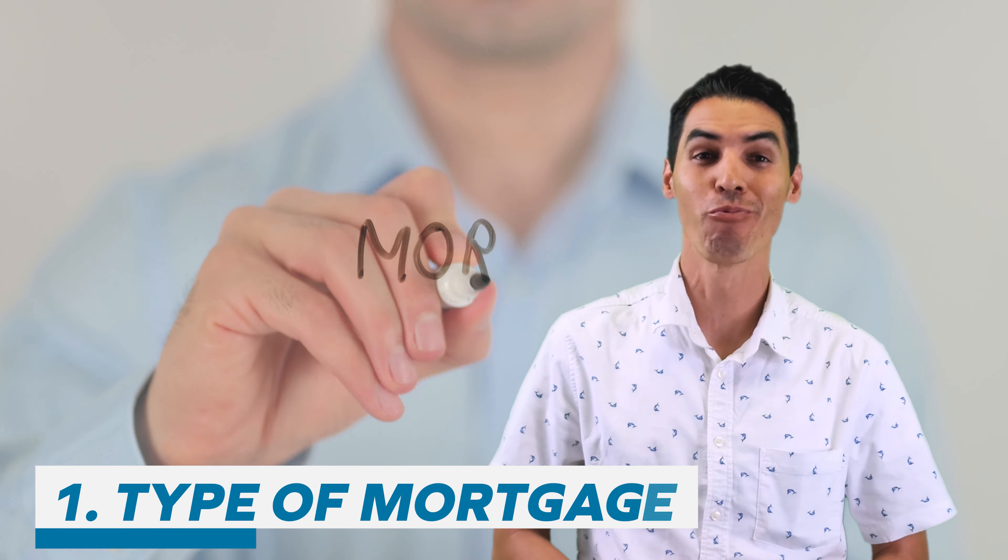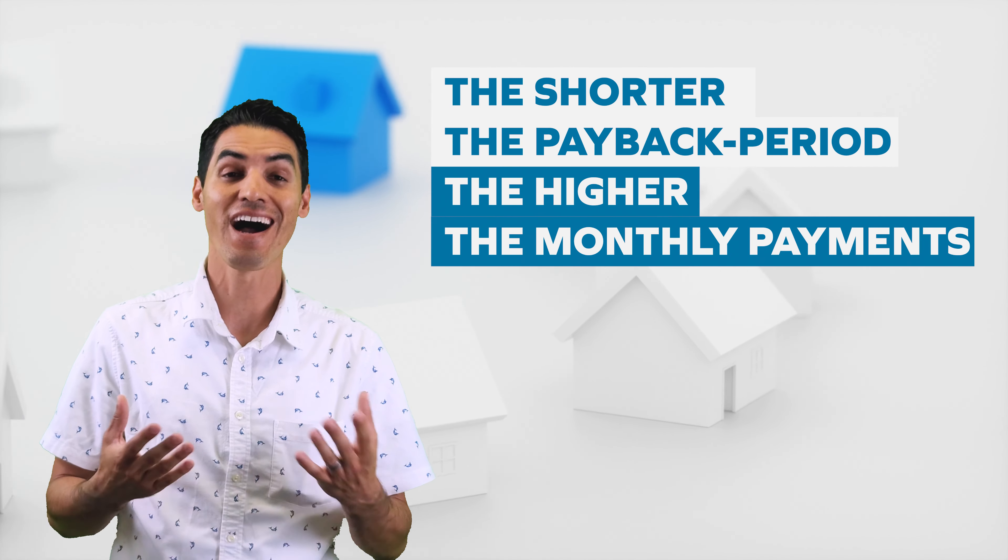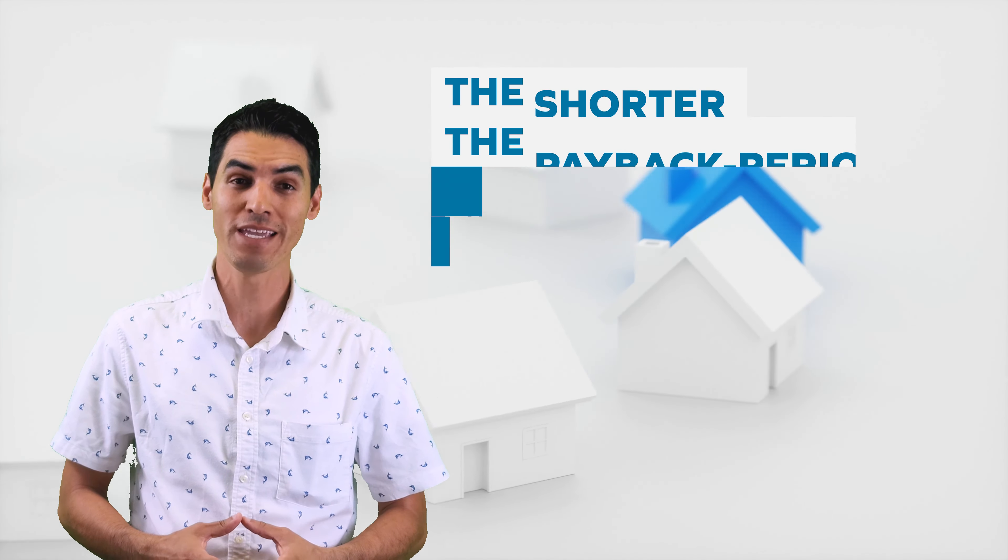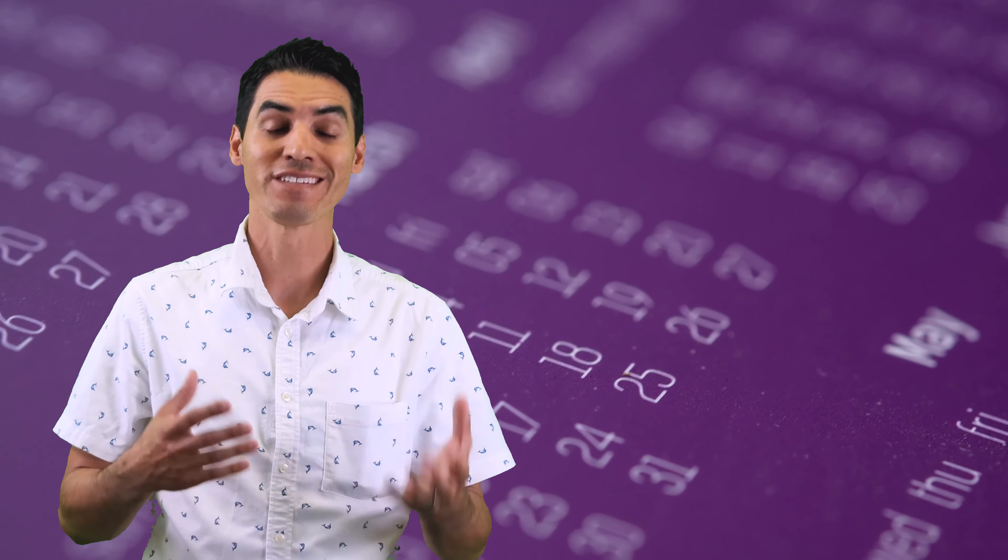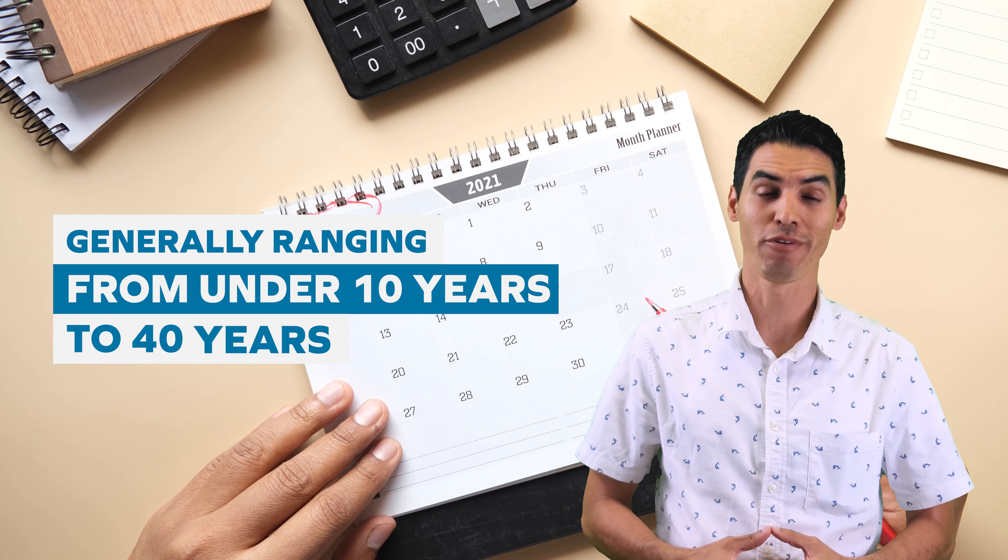Number two, term. What length of mortgage might be best for you? Fixed and variable mortgages often come in a variety of options. Obviously the shorter the payback period, the higher your monthly payments will be. The average conventional mortgage loan is about 30 years, but there are also different lengths available, from 10 to 40 years on the mortgage term.